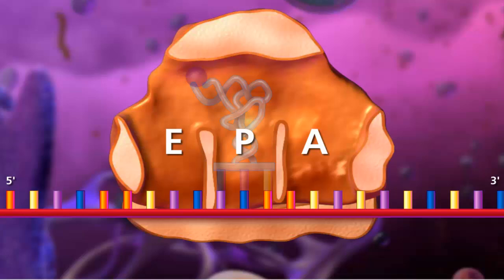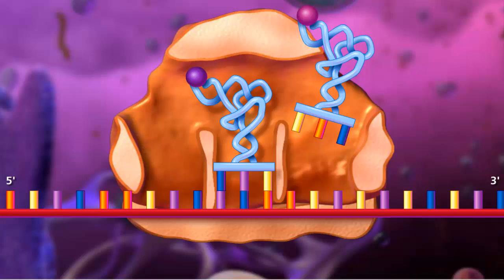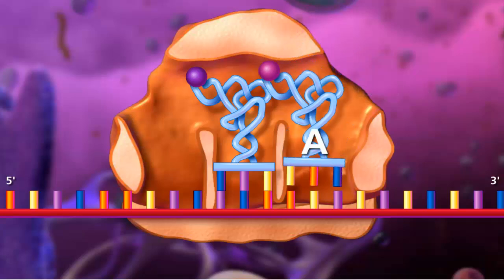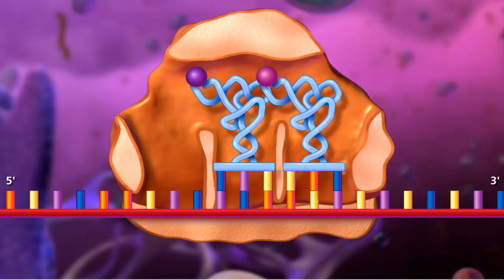During elongation, individual amino acids are brought to the messenger RNA strand by a transfer RNA molecule through complementary base pairing of the codons and anticodons. Each anticodon of a transfer RNA molecule corresponds to a particular amino acid. A charged transfer RNA molecule binds to the A site and a peptide bond forms between its amino acid and the one attached to the transfer RNA molecule at the P site.